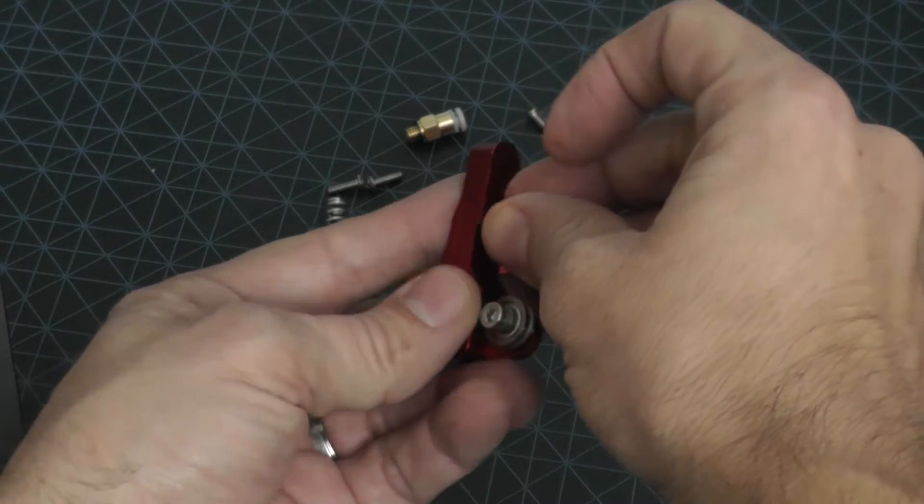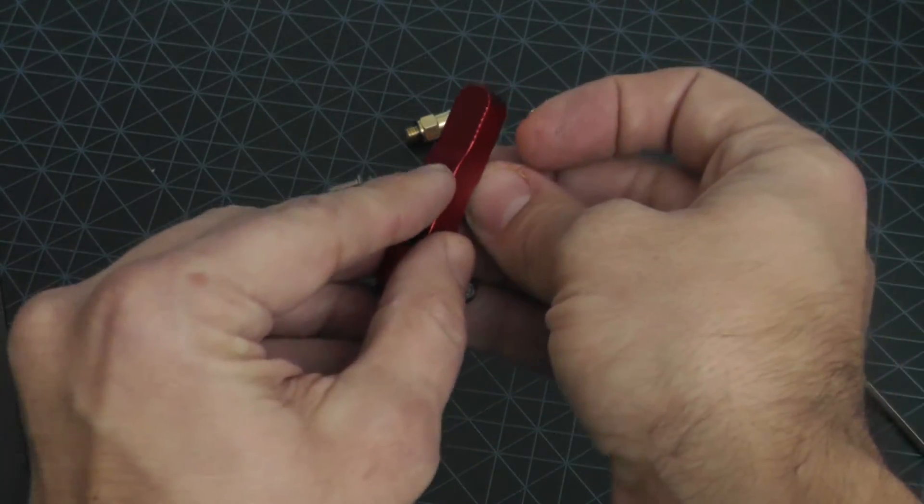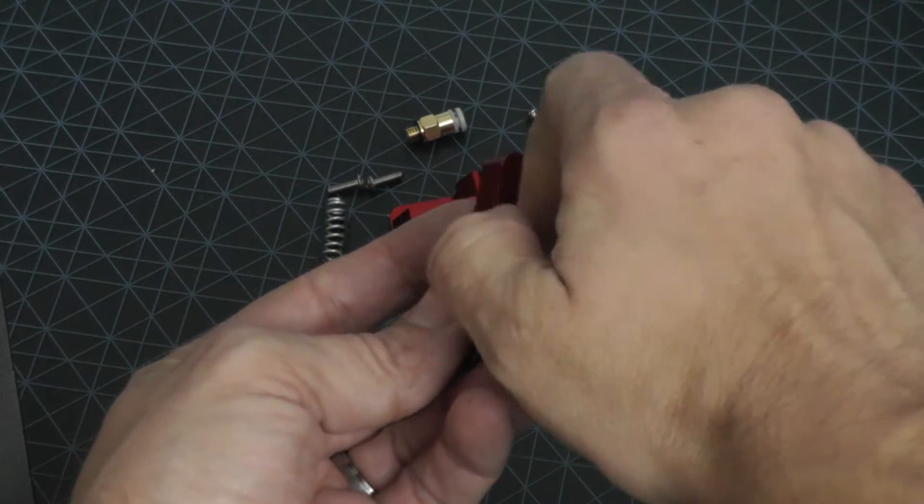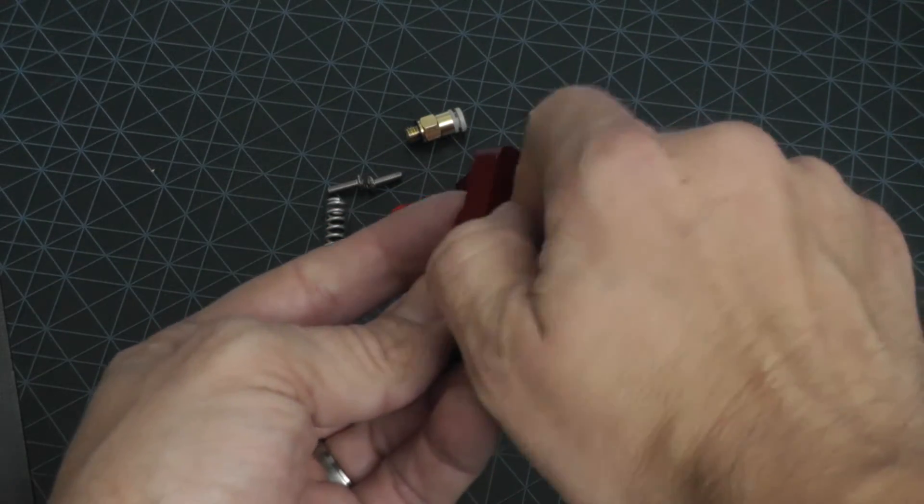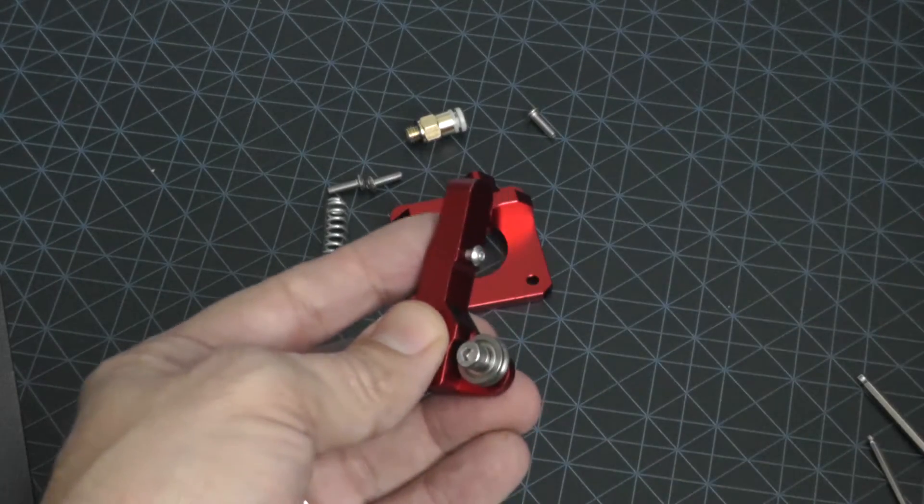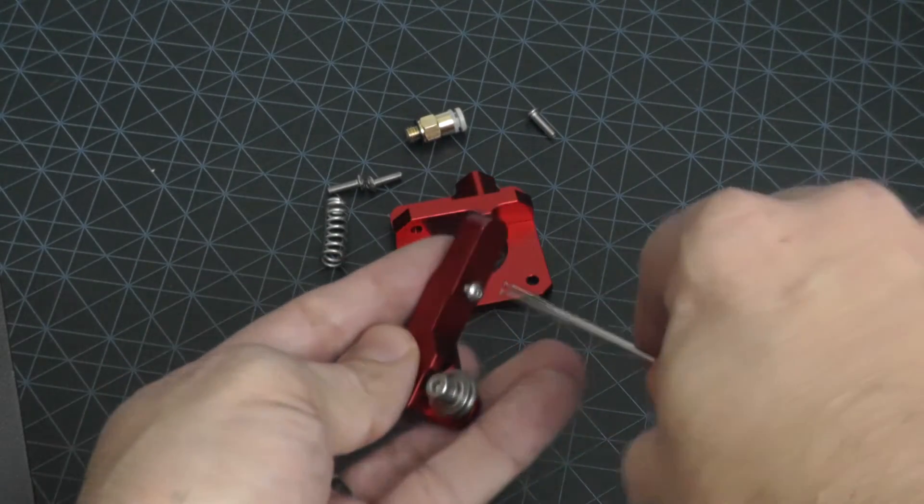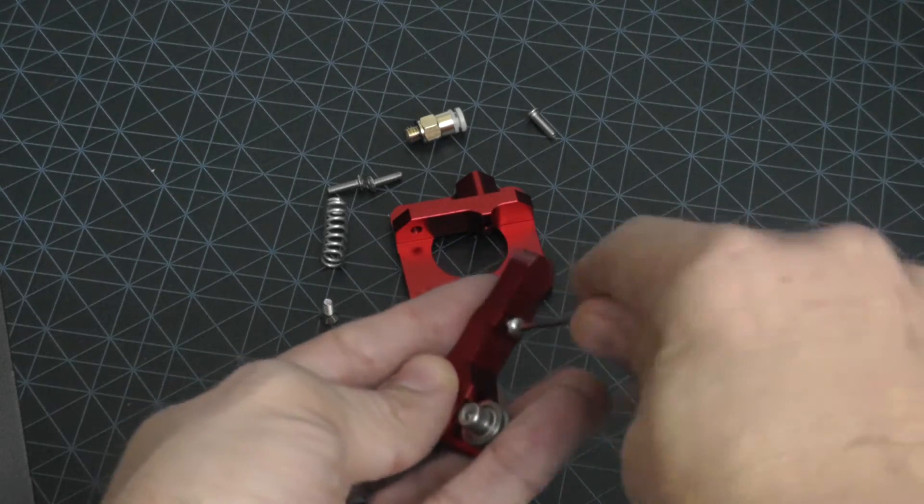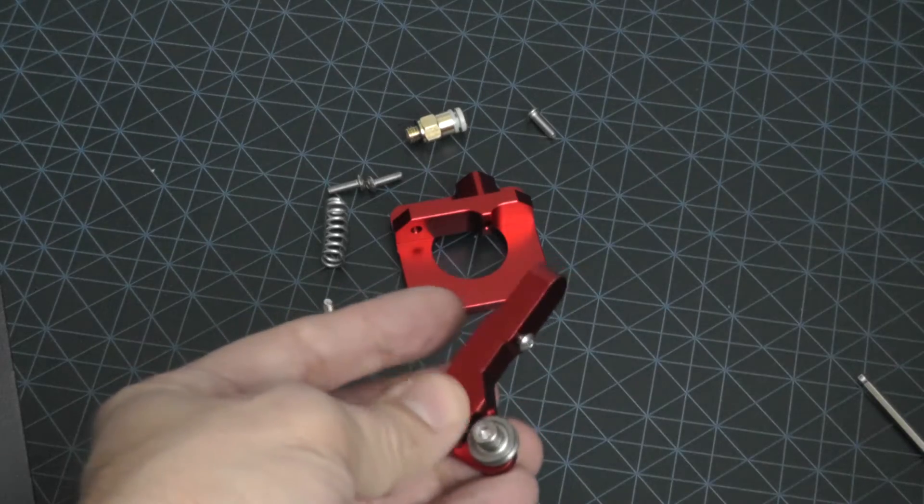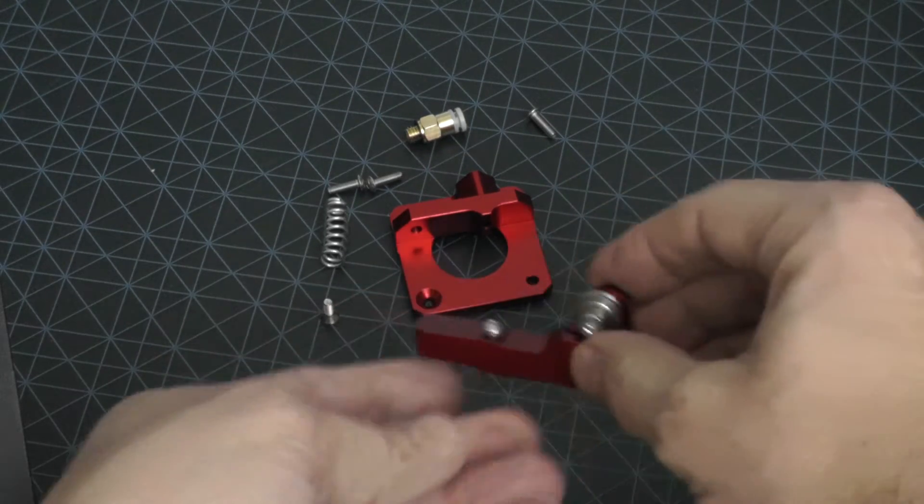Next up, we're going to take this M3 screw. This M3 screw will not go all the way through. This will hold one side of our spring. We can hand screw that in until it's almost all the way down. We'll grab a smaller allen wrench to tighten that into place. Again, you don't need to over tighten this. Just make sure it's snug. Now we're done with the extruder arm.